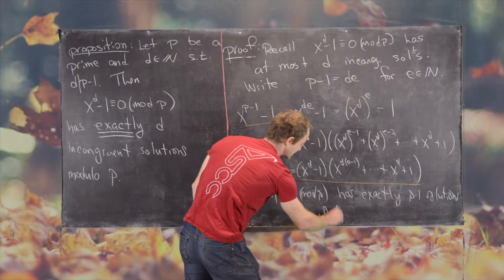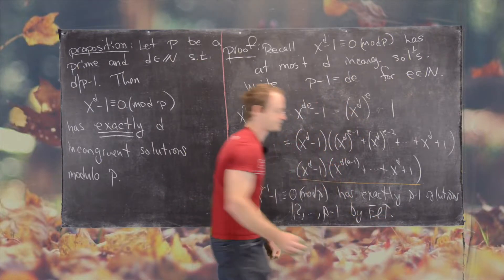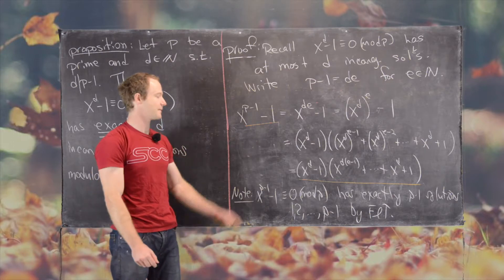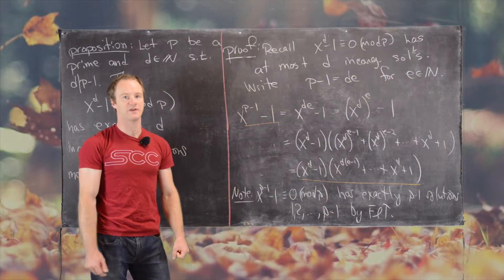And those are the following: 1, 2, up to p minus 1. And this is by Fermat's little theorem. So we're about halfway done with the proof. I'll clean up the board and then we'll finish it off.